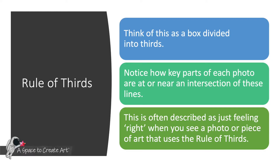Let's talk about the rule of thirds first, as this is what we're going to use in a lot of our lessons. When you think of the rule of thirds, think of it as a box divided into thirds. Look at the intersection of each of those lines. This is often described as just a feeling that the photograph or piece of art looks right when you look at it.